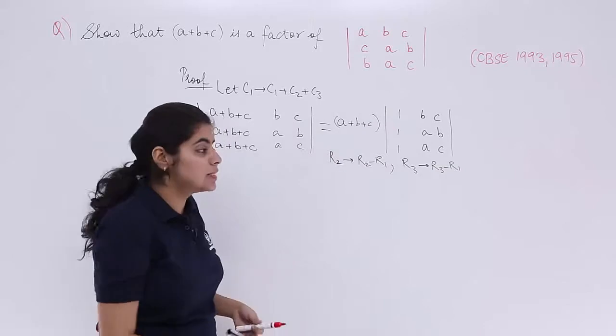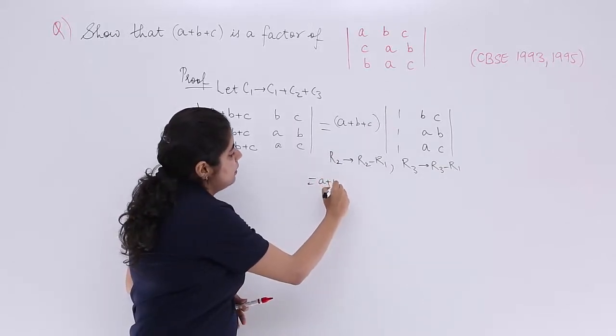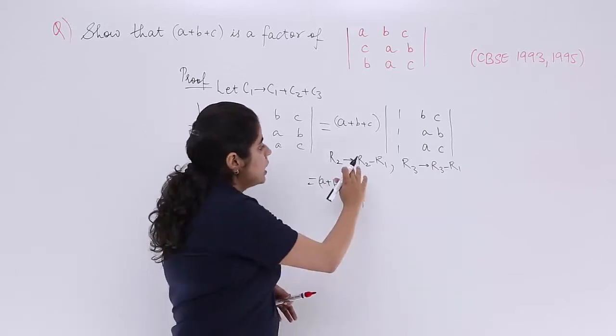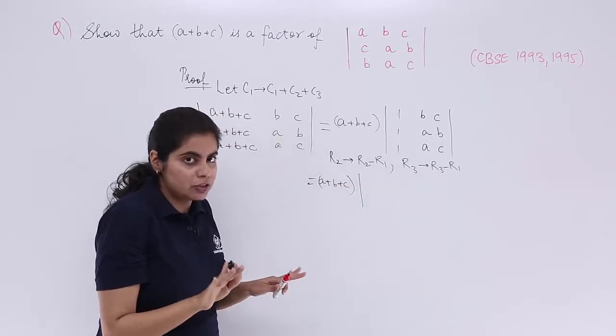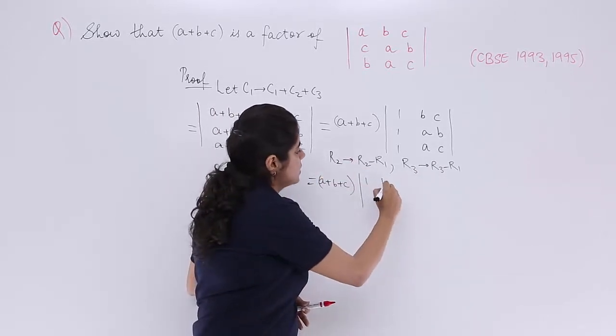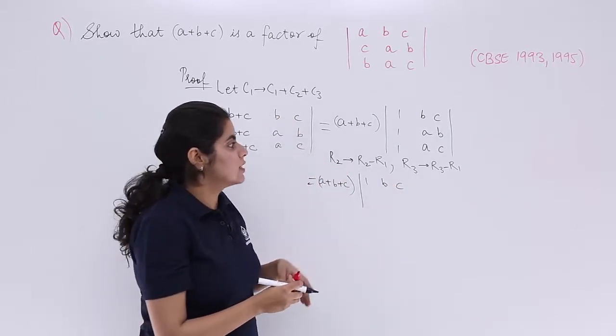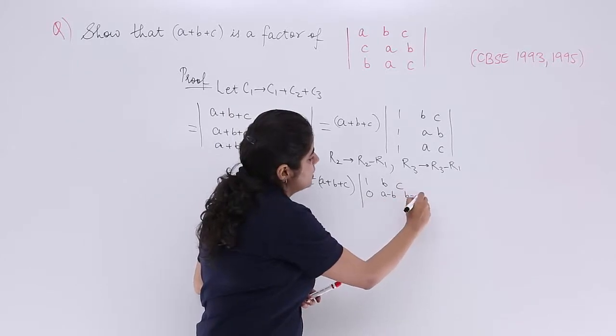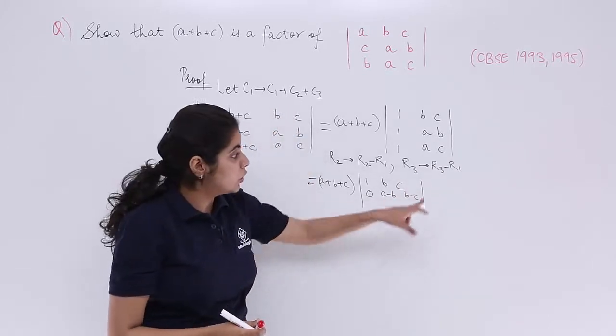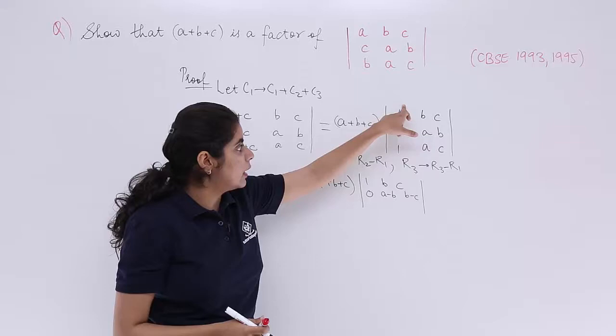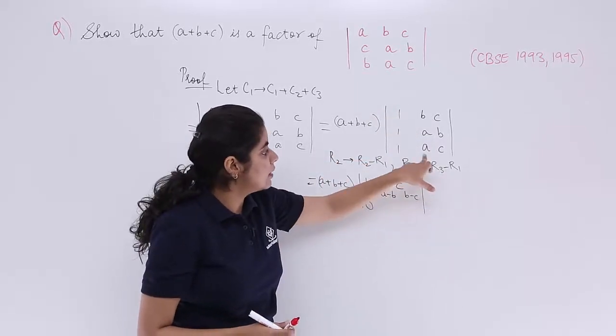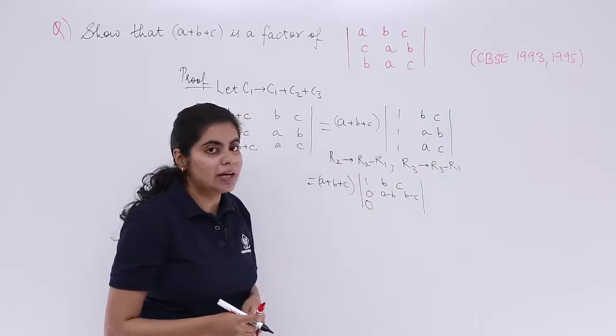That means 1 minus 1 will come 0. So a plus b plus c as it is, determinant changes. Row 1 has no operation, right? So copy row 1 as it is. Row 2 has row 2 minus row 1, so it is 0, b minus c, a minus b. Third row, row 3 again, 1 minus 1 is 0. Then r3 minus r1, so a minus b, c minus c.